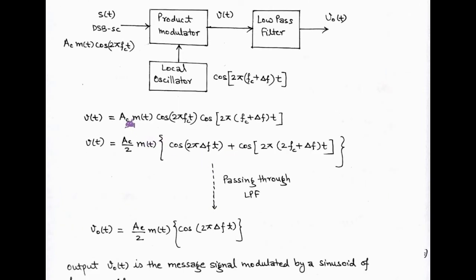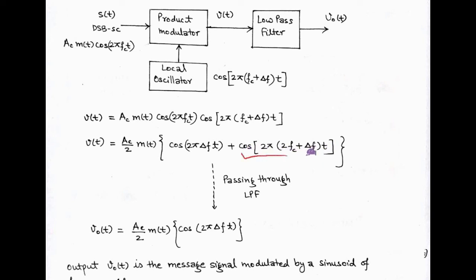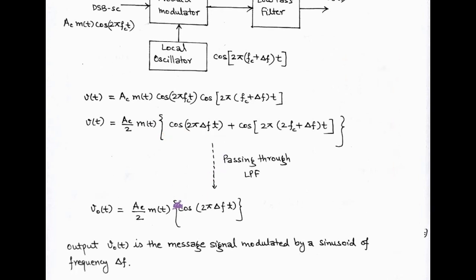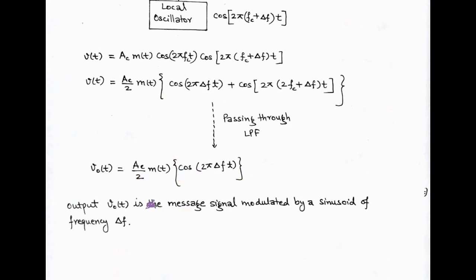The output v(t) is the product of the DSB-SC wave and the locally generated carrier: ac times m(t) cos(2π fc t) times cos[2π(fc + delta_f)t]. Using the 2 cos A cos B identity, multiplying and dividing by 2, we get v(t) equals (ac/2) times m(t) times [cos(2π delta_f t) plus cos(2π(2fc + delta_f)t)]. The second term corresponds to high frequency. After passing through the low pass filter, we retain only the first term: v0 equals (ac/2) m(t) cos(2π delta_f t).